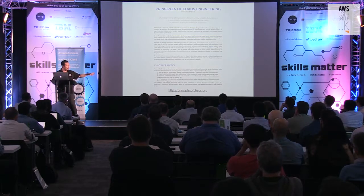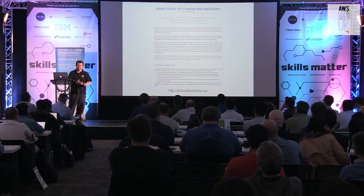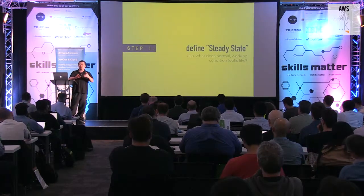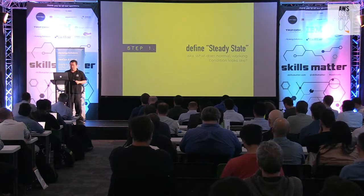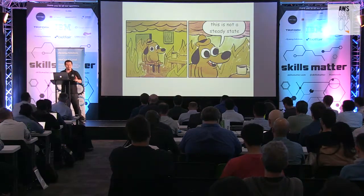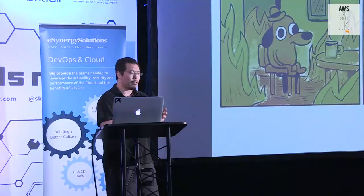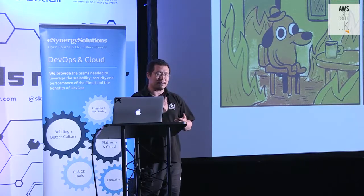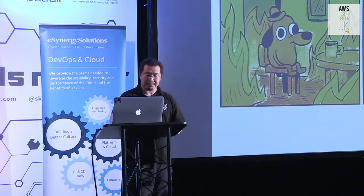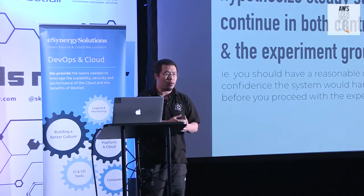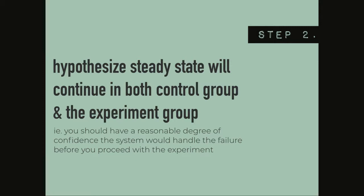If you go to principleofchaos.org, you'll find documentation around what this discipline is about and how you can start doing chaos experiments with four simple steps. Step one: define what the normal state looks like — this is where you see the system working as expected. But if everything's on fire all the time, you don't have a steady state and you're not ready to start doing chaos experiments, in the same way that you wouldn't want to vaccinate someone whose immune system is already compromised. Once you have your steady state, you can start to hypothesize what should happen when certain failures occur. If you want to run experiments in production, you should be quite confident your system can handle those failure modes first.